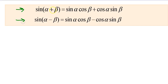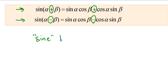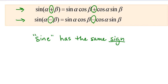Notice when you're adding the angles, you have a plus, and when you're subtracting the angles, you have a minus. So I like to say that sine has the same sign — when it's plus, it's plus, and when it's minus, it's minus. That helps me remember.